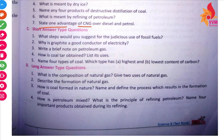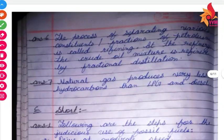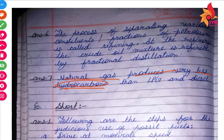State one advantage of CNG over diesel and petrol. Natural gas produces very fewer hydrocarbons compared to LPG and diesel. So CNG, which is our natural gas, produces very less hydrocarbons than LPG and diesel.